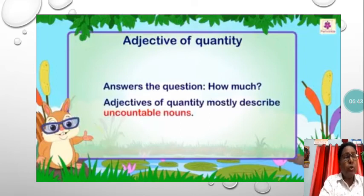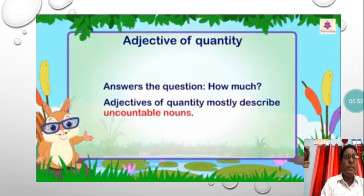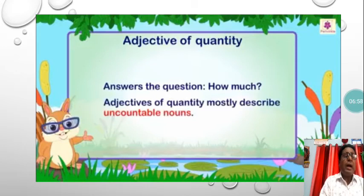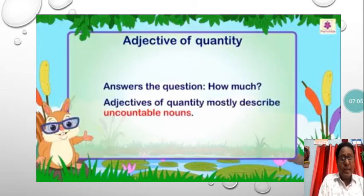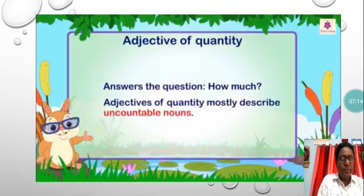Examples of countable nouns: books, chairs, shirt, house, people — these are countable nouns. And uncountable nouns include water — you cannot count water — you cannot count milk, you cannot count air. So these are called uncountable nouns.